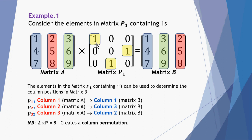Let's check carefully the elements in the permutation matrix. The element P11 is a key for working out how this permutation occurs. P11 tells me that column 1 of matrix A is located in column 1 of matrix B — so column 1 to column 1. The second element with a 1 in the permutation has the reference P23, which tells me that the second column in matrix A is relocated to the third column in matrix B — so column 2 to column 3.